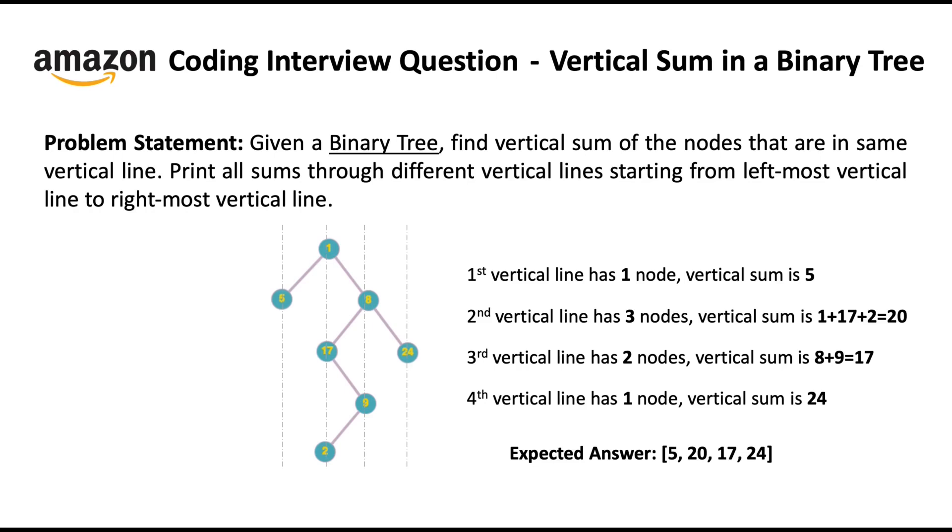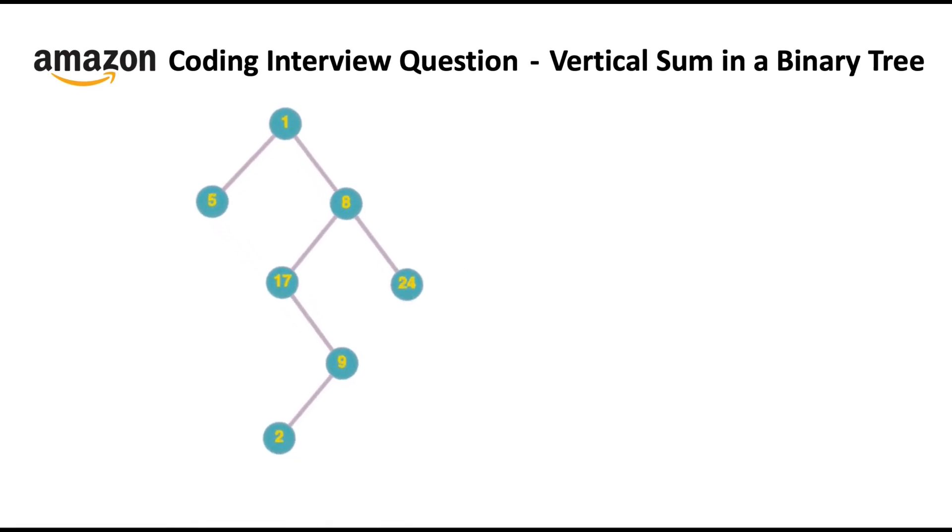Okay, so let's discuss the solution to this problem. Firstly, we need to find out the horizontal distance of each node of the tree from the root node. Node with value 1 is the root node in this case. The idea here is, if two nodes have the same horizontal distance, then they are on the same vertical line.